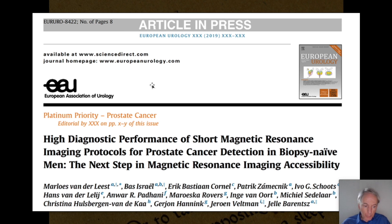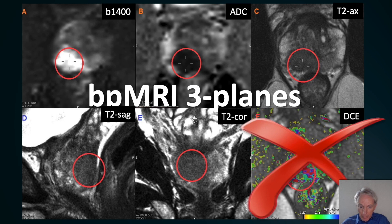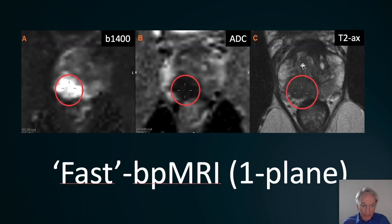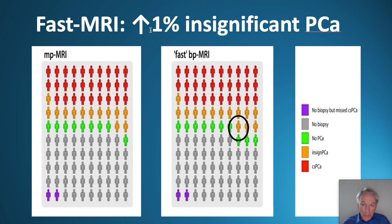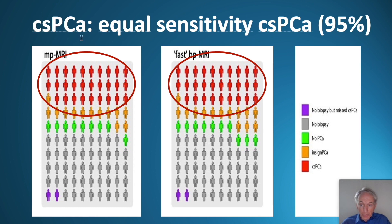The last study had a head-to-head comparison of more than 600 patients. This prospective multi-center study compared multi-parametric MRI versus three-plane bi-parametric MRI versus one-plane bi-parametric MRI — called fast MRI — which consists of T2-weighted imaging and diffusion-weighted imaging, both in the axial plane. With fast MRI, there was a slightly increased detection of one percent for insignificant cancer, and two percent of men had an unnecessary biopsy. Most importantly, the detection rate of clinically significant cancer was equally high at 95 percent.